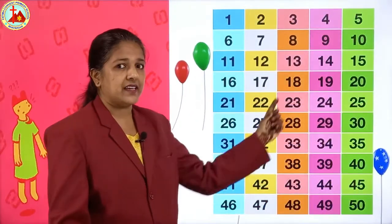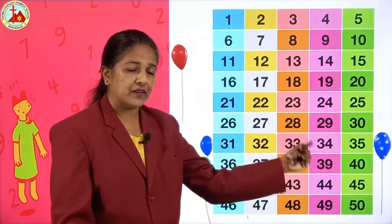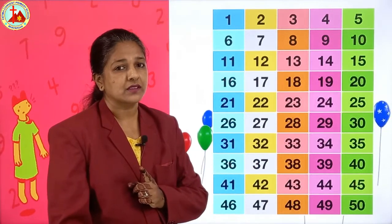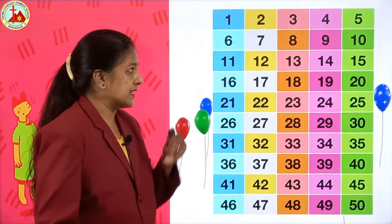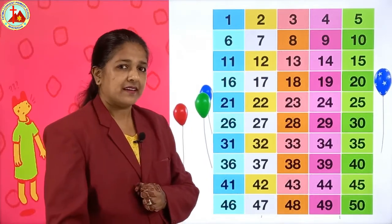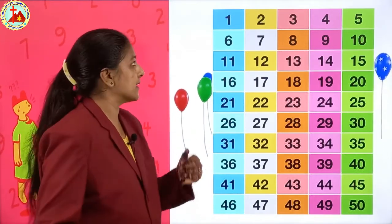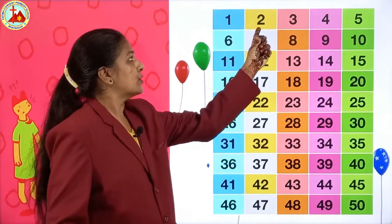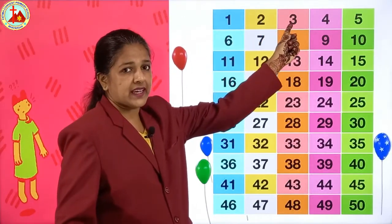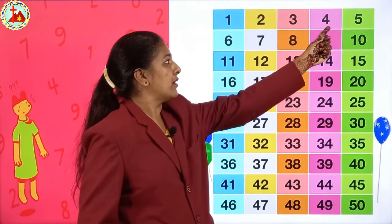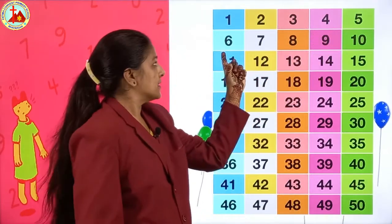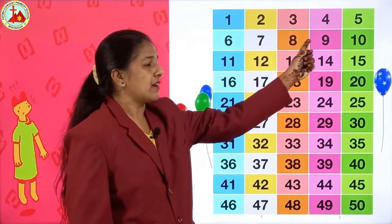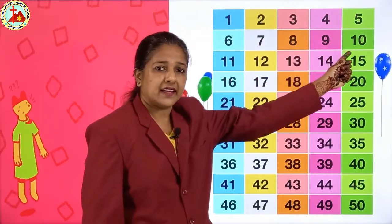Here you can see 1 to 50 written. You all have to repeat after miss. Ready? So we will start. This is 1, 2, 3, 4, 5, 6, 7, 8, 9, 10.